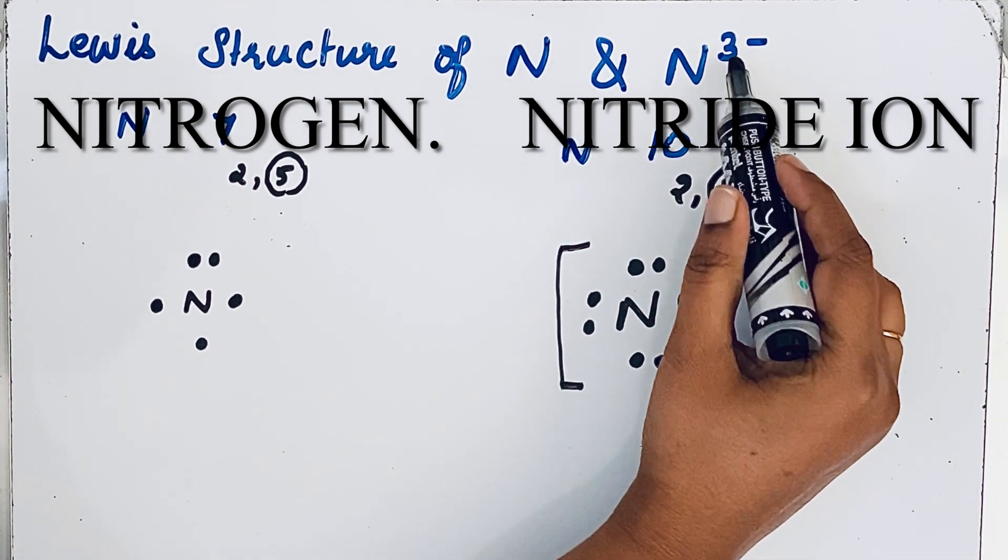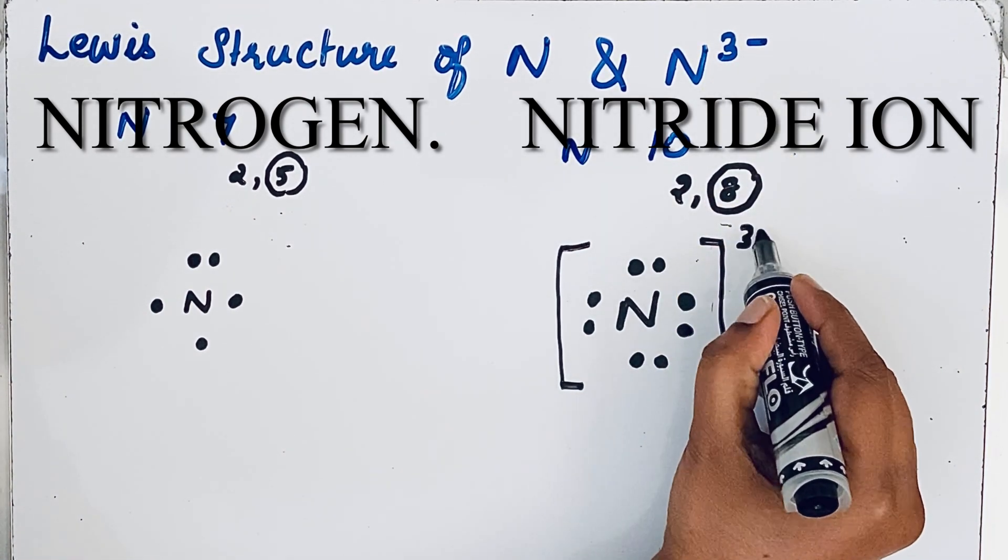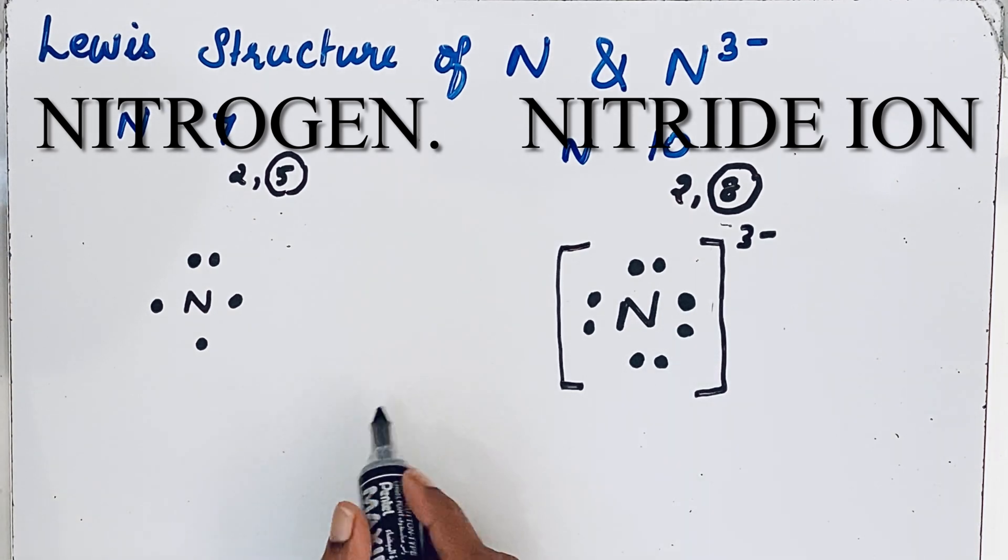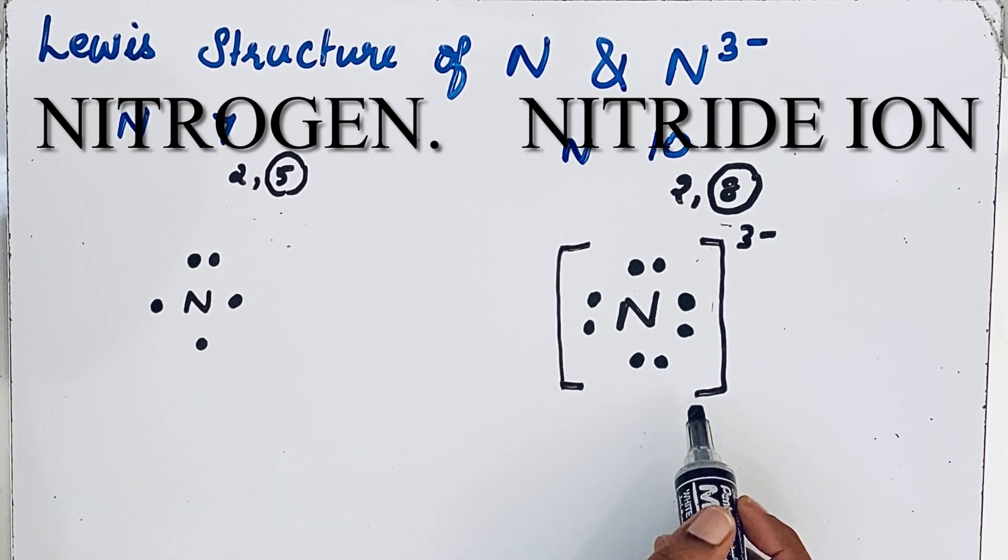And this charge, three minus, is there, so we are going to write it on the right hand side. So this is the Lewis structure of nitrogen and nitride ion. Thanks for watching.